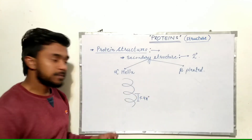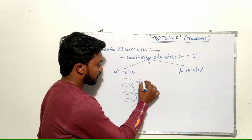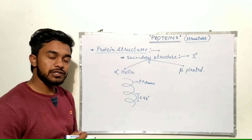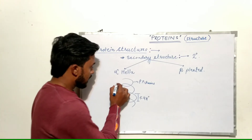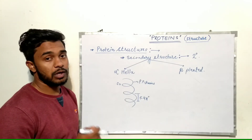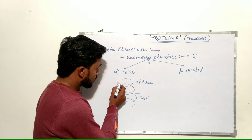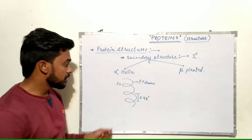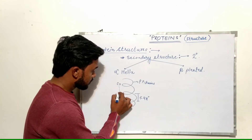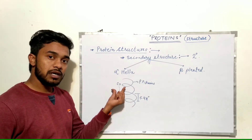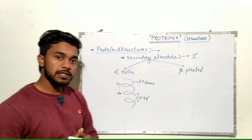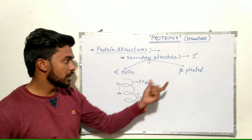The polypeptide chains in alpha helix are held together by hydrogen bonds. As discussed in earlier amino acid videos, the hydrogen bond is formed between the carbonyl group (C=O) and the amino group (N-H). This is how bond formation takes place in alpha helix, which is found in a right-handed fashion.